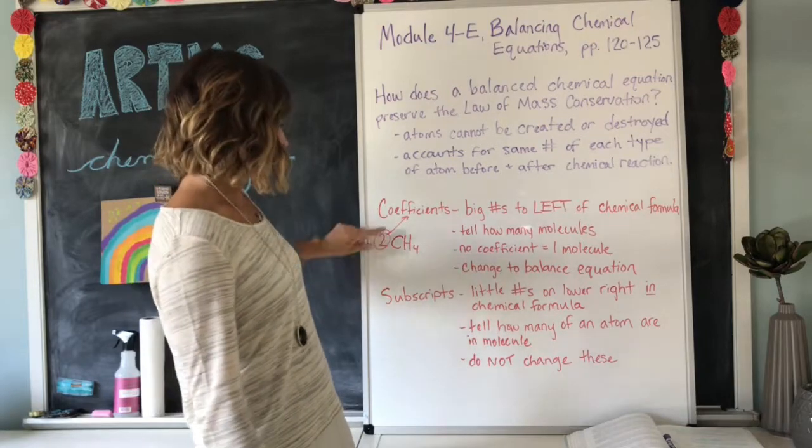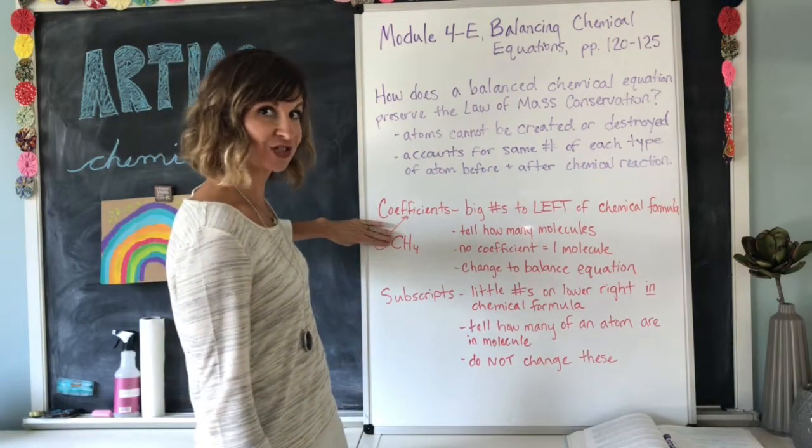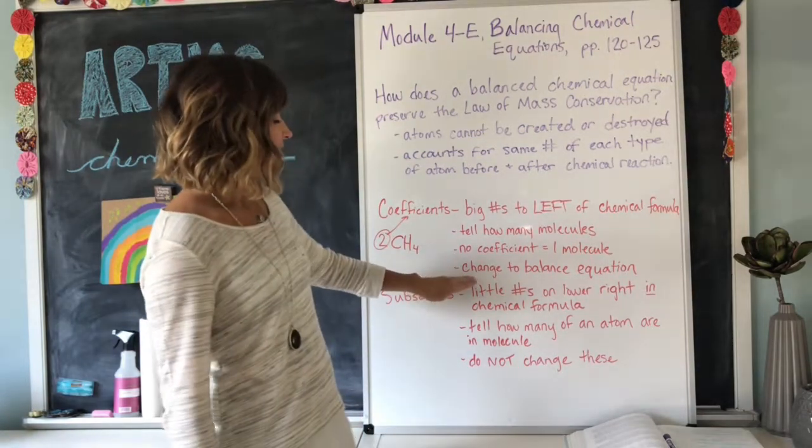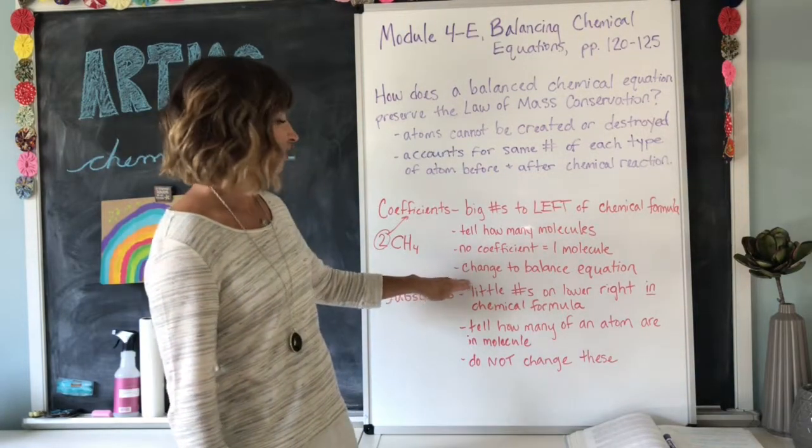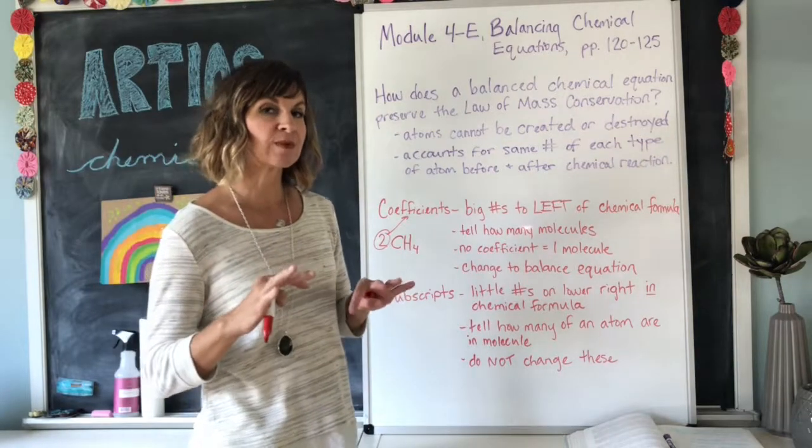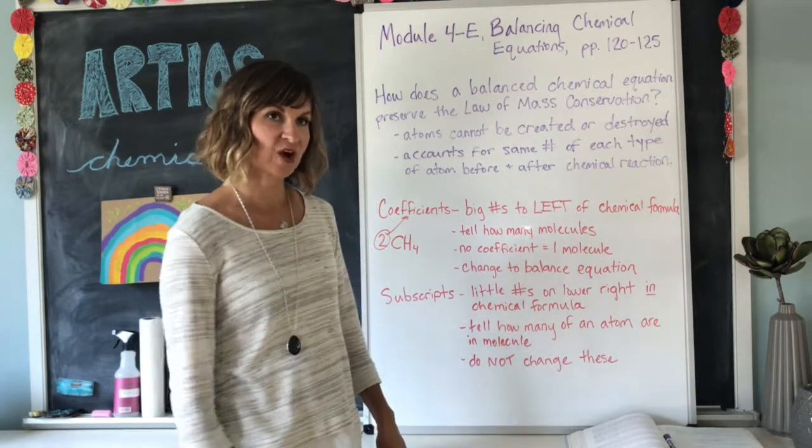When there is no coefficient out front, it is assumed or understood that that means there is one molecule. And when you are balancing equations, this is the number that you can change. You change the coefficients out front to show how many molecules are present.